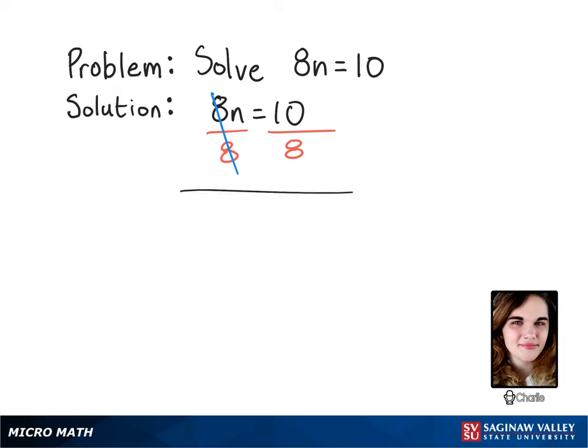And on the right now I have 10 over 8. So the only thing left to do with this is to simplify the fraction. And if you do that correctly you'll get 5 fourths. So the answer to this one is 5 fourths.